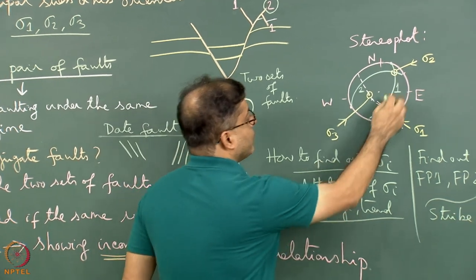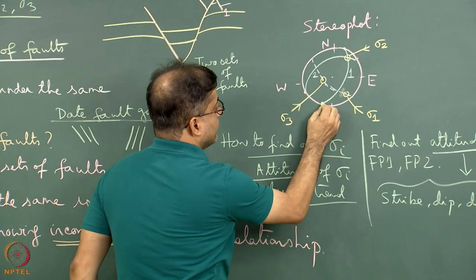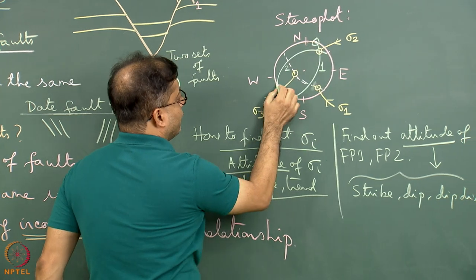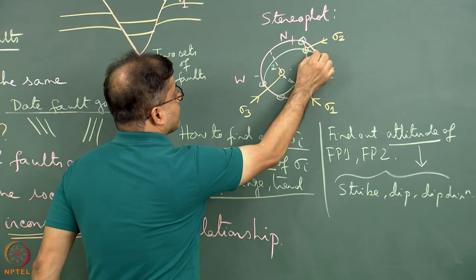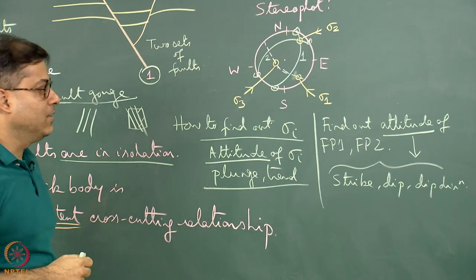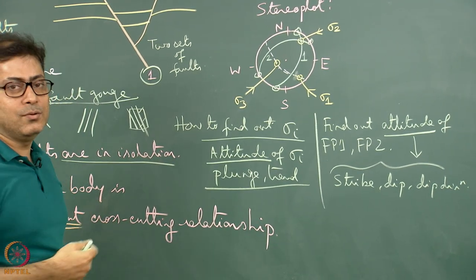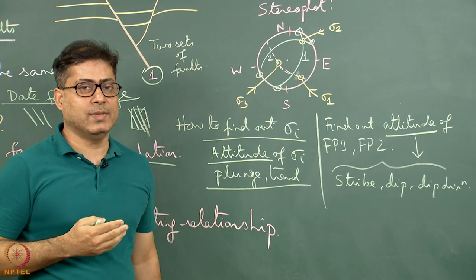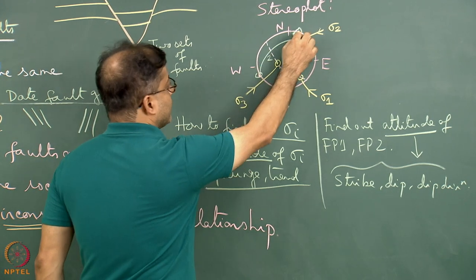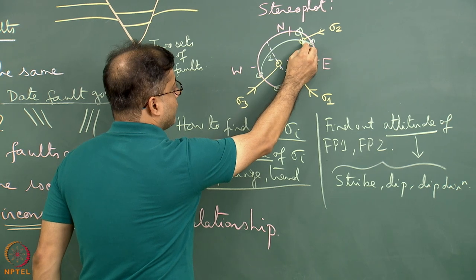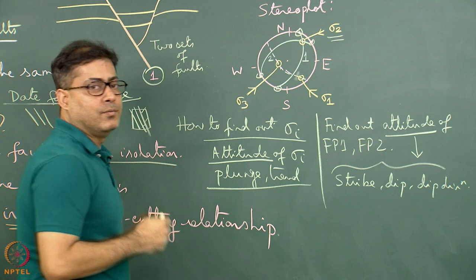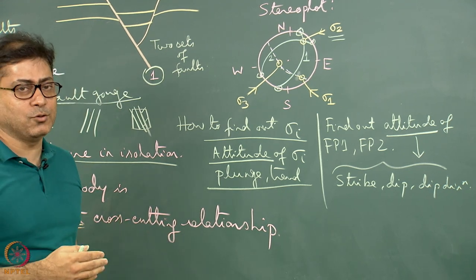Here, the strike of fault plane 1 and the strike of fault plane 2 are different, which is a different scenario from the Andersonian case. Where the two great circles intersect is a point marked as the intermediate principal stress axis, sigma 2.